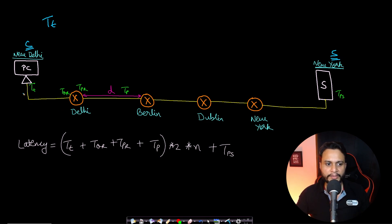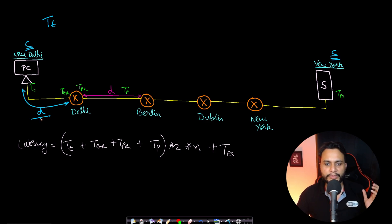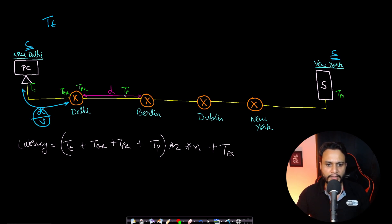Once the packet is transmitted on the physical wire, there is some distance d to reach the nearest router. The time depends on the velocity at which your packets travel. If you are using a fiber optic cable it may travel at the speed of light, or if it is a copper wire it travels at the speed of electricity, which is significantly lower. The time is distance divided by velocity, and this is called tp, the propagation delay.